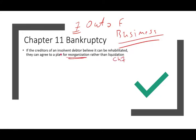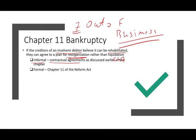If a creditor of an insolvent debtor believes it can rehabilitate the business, then they can agree to a plan for reorganization. The plan can be informal — a contractual agreement as discussed earlier in the chapter — or it can be formal, which goes through Chapter 11.